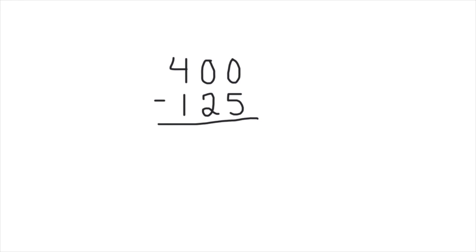So we start in our ones place where we have zero minus five. Since we can't take away anything here, we have to cross out and regroup. There is nothing in the tens place to take, so we are going to go to the hundreds place to borrow.